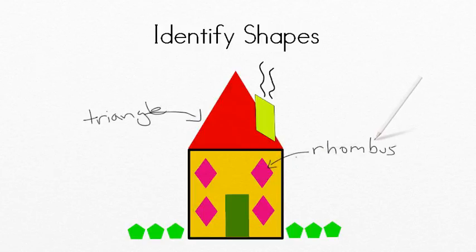Do you see a rectangle? Did you point to the door? The door is a rectangle. It has two different equal sides. This is the rectangle.